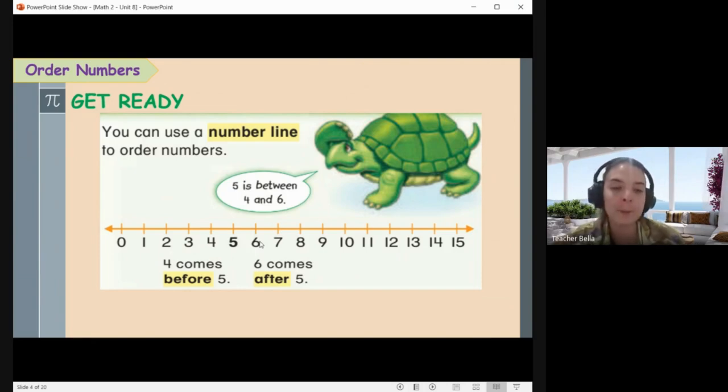So then we know four comes before five and six comes after five. Okay, so five is between four and six.